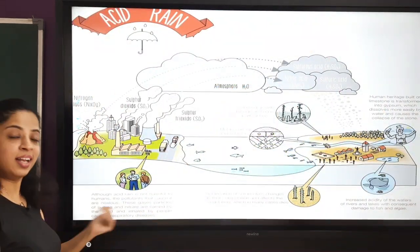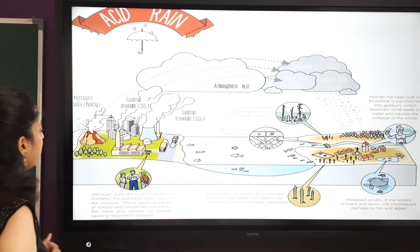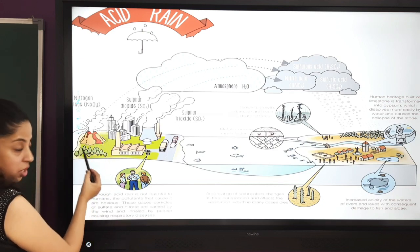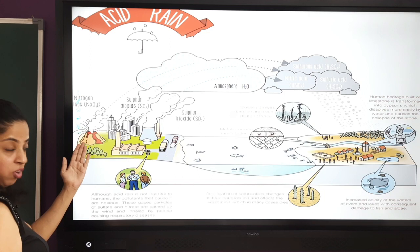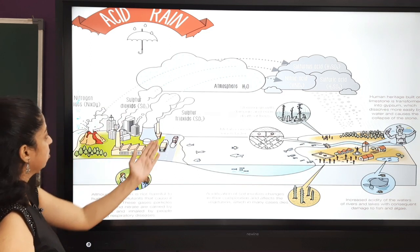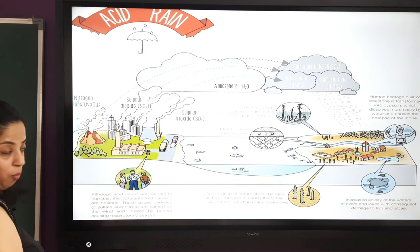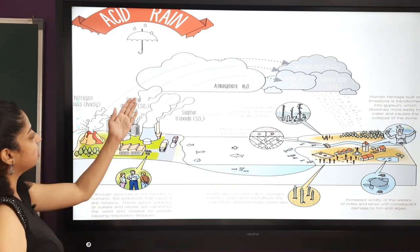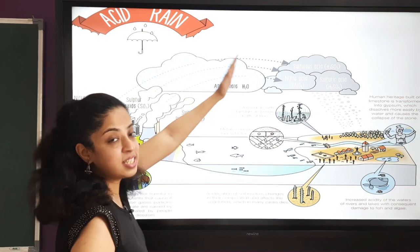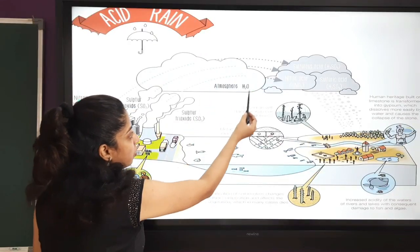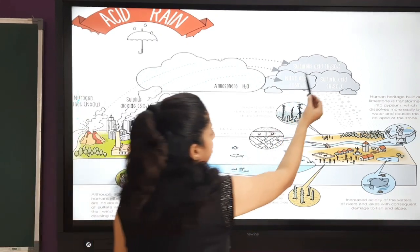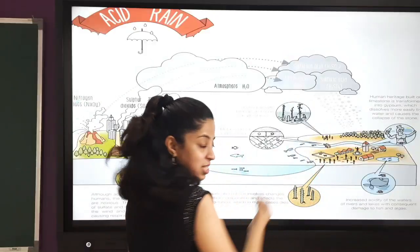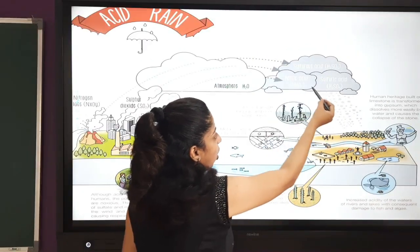Here is a detailed diagrammatic explanation of acid rain. You can see factories, boilers, and volcanic eruptions. Due to both natural causes like volcanic eruptions and man-made sources, nitrogen oxides and sulfur dioxide are formed. When these are released into the atmosphere, they react with atmospheric water to form sulfurous acid, sulfuric acid, nitrous acid, and nitric acid, which fall as rain or snow.